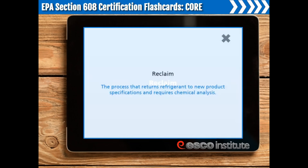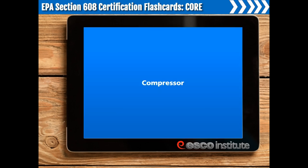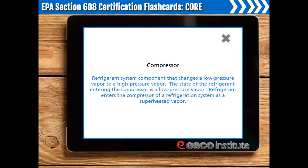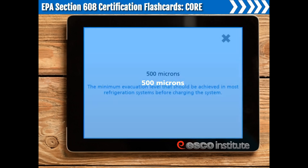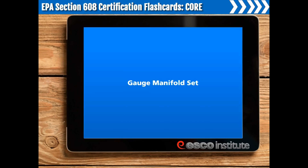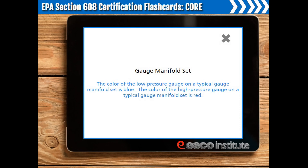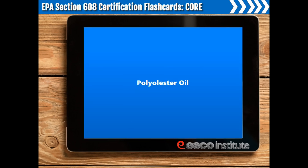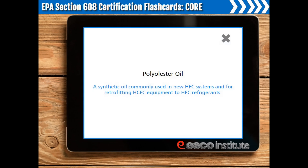Reclaim. Reclaiming is the process that returns refrigerant to new product specifications and requires chemical analysis. Compressor. A compressor is a refrigerant system component that changes a low-pressure vapor to a high-pressure vapor. The state of the refrigerant entering the compressor is a low-pressure vapor, specifically a superheated vapor. 500 microns is the minimum evacuation level that should be achieved in most refrigeration systems before charging. The low-pressure gauge on a gauge manifold set is blue; the high-pressure gauge is red. Polyolester Oil is a synthetic oil commonly used in new HFC systems and for retrofitting HCFC equipment to HFC refrigerants.